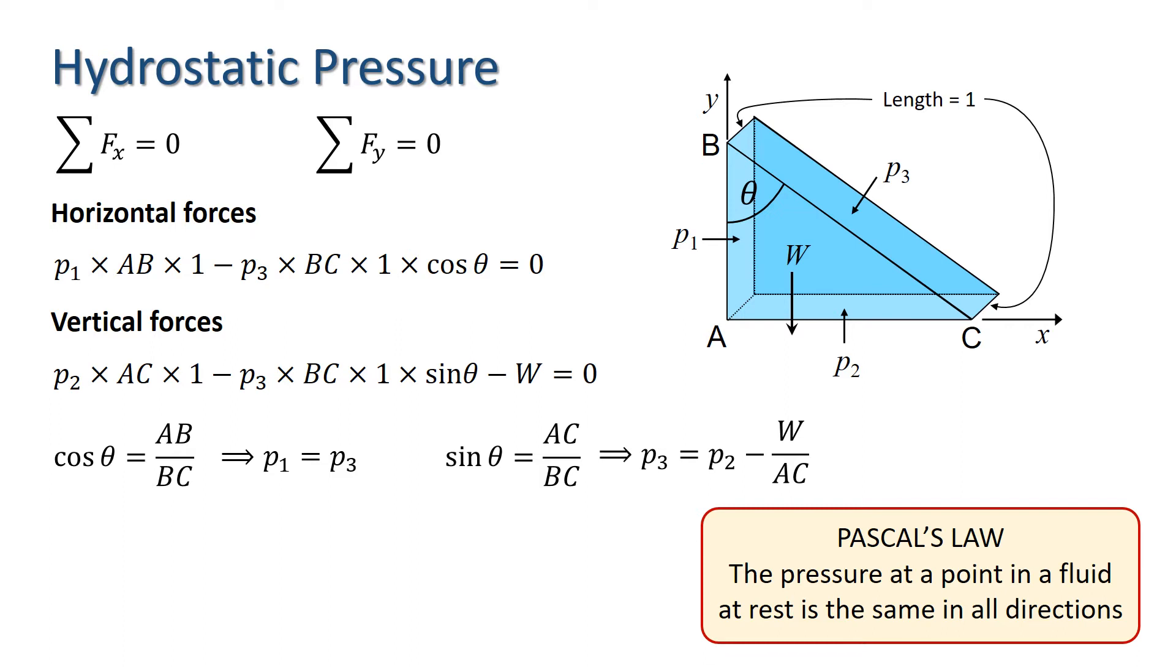Now, the purpose of this analysis was to look at the pressures at a point, so we take the limit as the dimensions of our prism shrink to zero. In the limit, the weight will tend to zero, and thus P3 will equal P2.